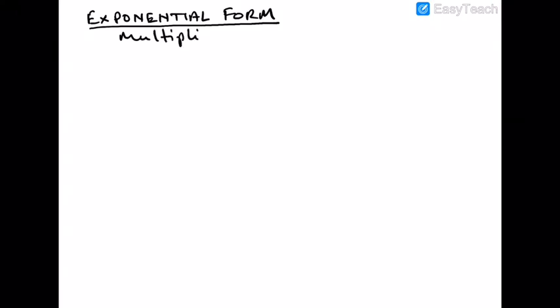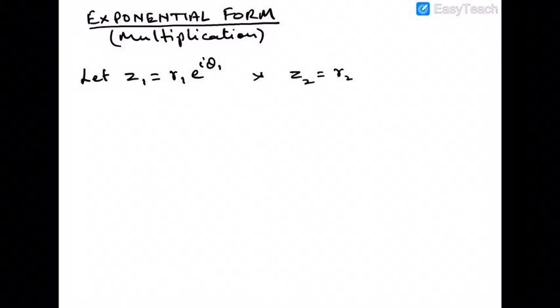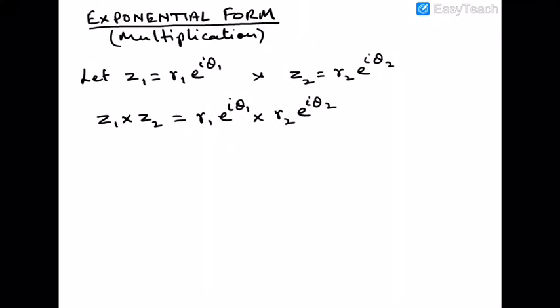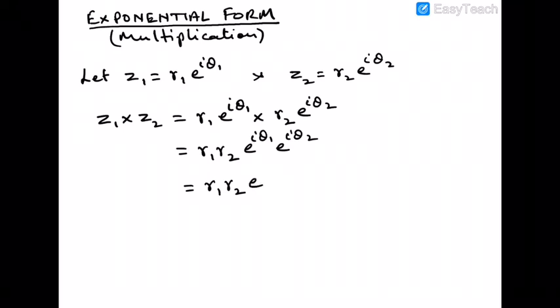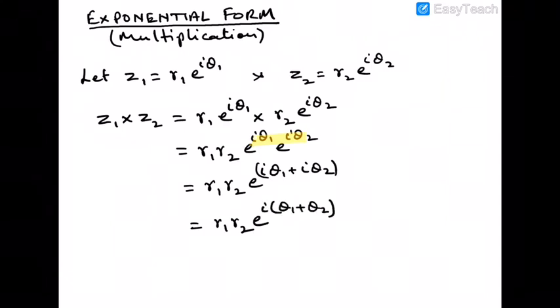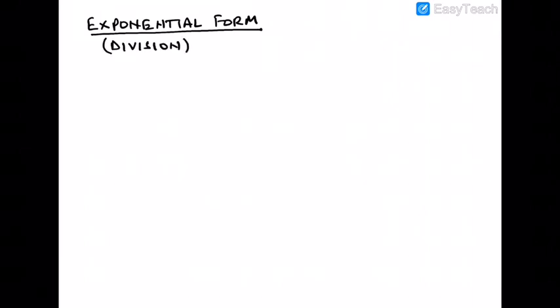Now let's do multiplication with complex numbers in exponential form. Let z₁ = r₁·e^(iθ₁) and z₂ = r₂·e^(iθ₂). Then z₁·z₂ = r₁·e^(iθ₁) · r₂·e^(iθ₂) = r₁r₂·e^(iθ₁)·e^(iθ₂) = r₁r₂·e^(i(θ₁ + θ₂)). So z₁z₂ = r₁r₂·e^(i(θ₁ + θ₂)).